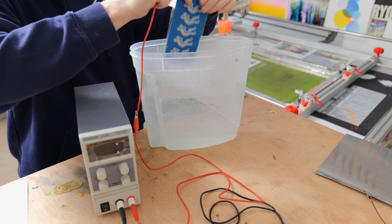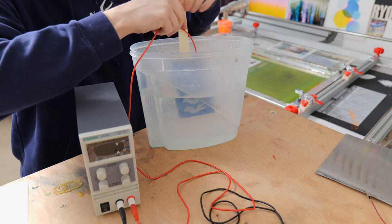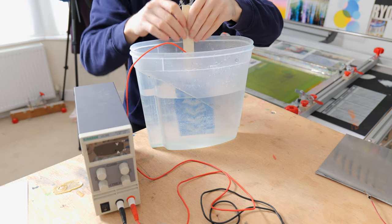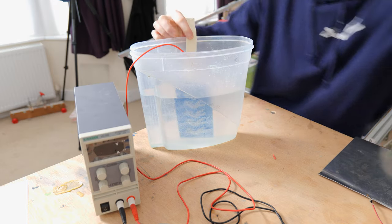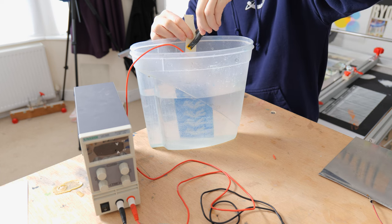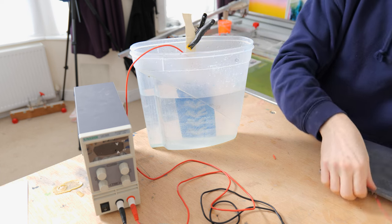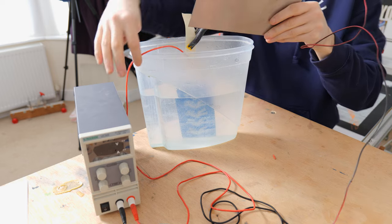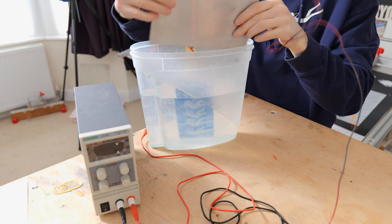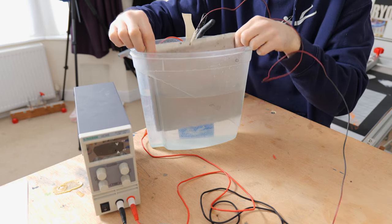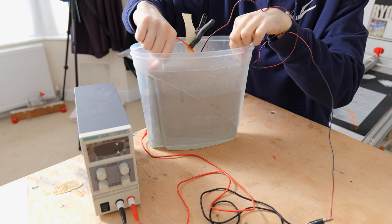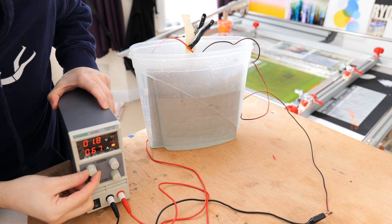The electro etching requires warm water and salt solution and I'm using a bench top power supply. Batteries can be used but they're not as reliable compared to a dedicated power supply. Attach your positive wire to the plate you want to etch and a negative wire to a sacrificial stainless steel plate. Set your power supply to approximately 2 volts and leave it in there for a few hours to etch.